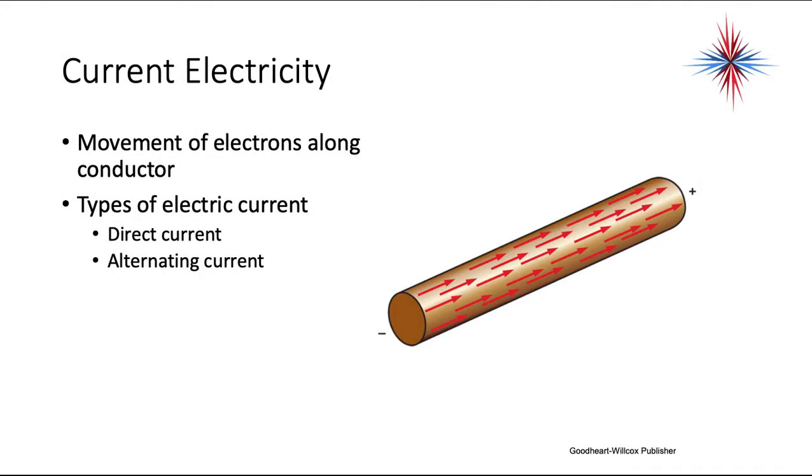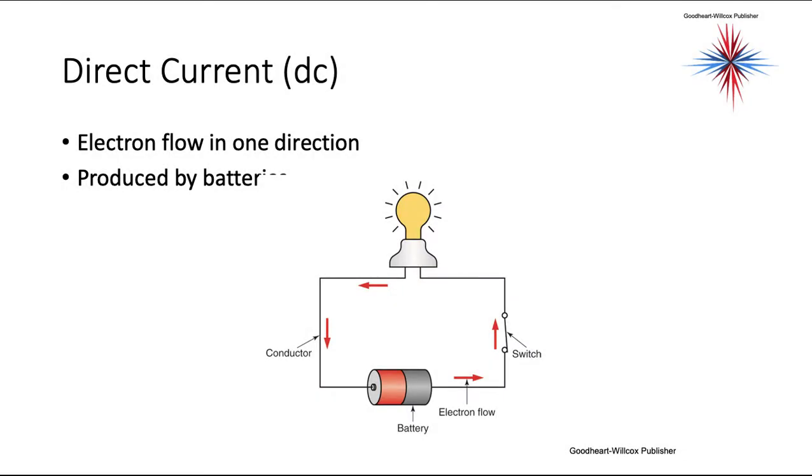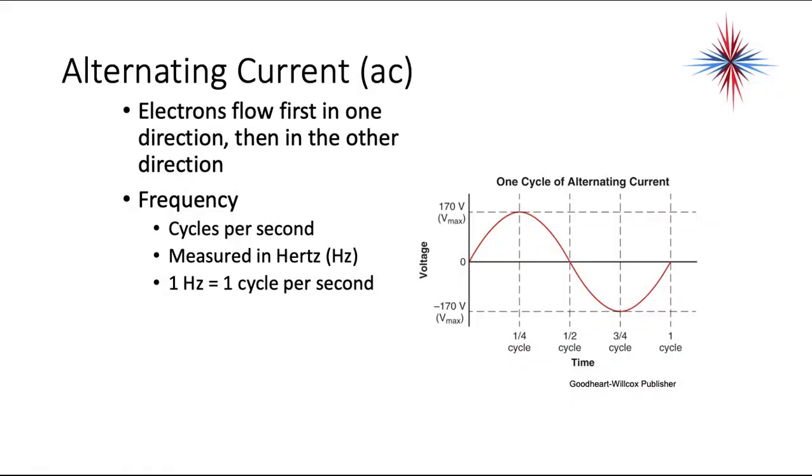Current electricity moves electrons along a conductor. There's two types of electric current: direct current and alternating current. Direct current has electron flow in one direction. It's produced by batteries. You notice the electron flow comes through one direction. That's direct current. Alternating current, electrons first flow in one direction, then in the other direction. The frequency of alternating current is how many cycles per second. A full cycle is what you're seeing here, one cycle of alternating current, starting off to a positive, going to a negative, and back to zero. It's measured in hertz. One hertz is one cycle per second. It's very important to know that 60 hertz is 60 cycles per second, and in North America, that is what the frequency of all alternating current is supposed to be.